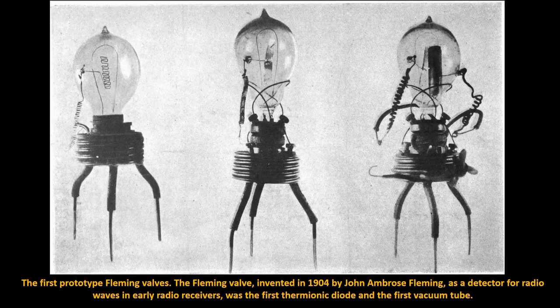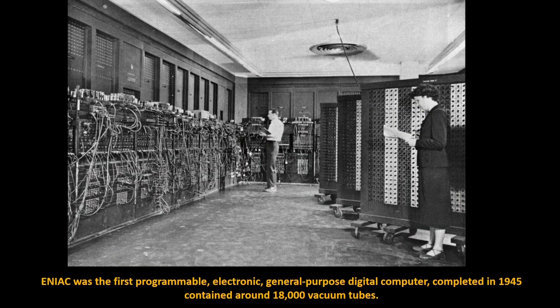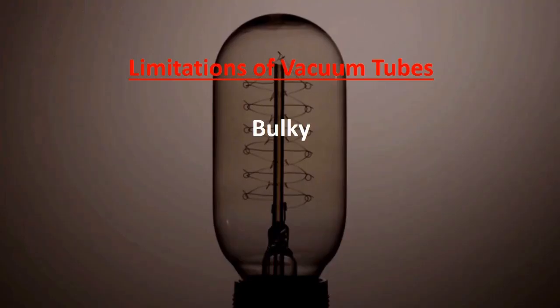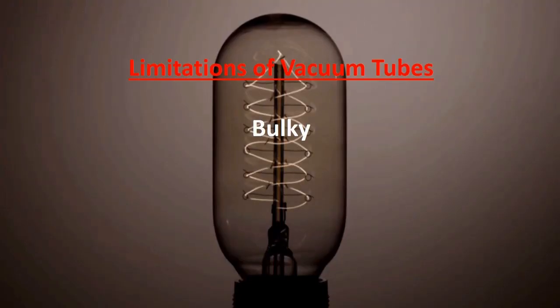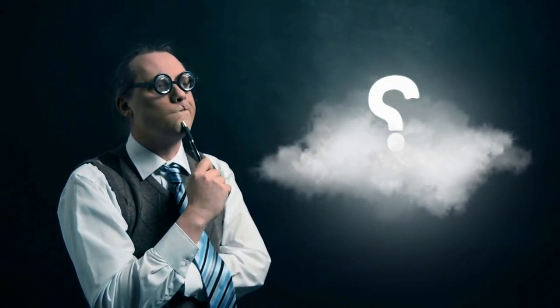The story of the evolution of microprocessors begins with a humble device called the vacuum tube, developed in the early 1900s. Vacuum tubes were used in early radios and amplifiers, and were the key component in the first electronic computers. Vacuum tubes had several limitations — they were bulky, fragile, and consumed a lot of power. This prompted scientists to look for a new technology that could revolutionize the world of computing.